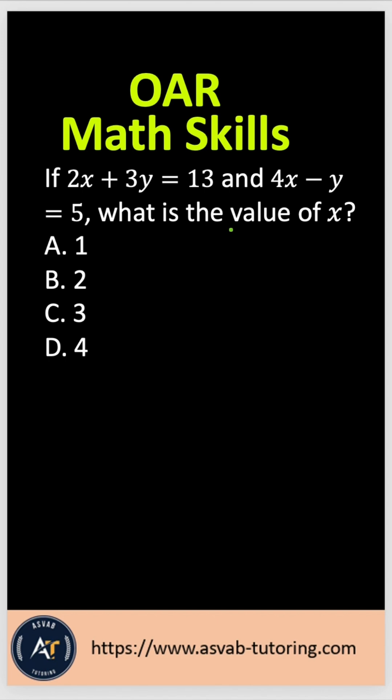So in order to solve this problem, you need to use the process of elimination because this is a system of linear equations. That means two equations, two unknowns. So let me write that down. You have 2x plus 3y equal to 13 and then 4x minus y equal to 5.